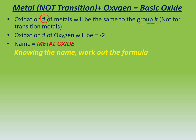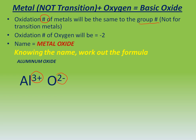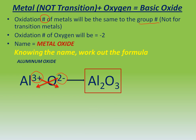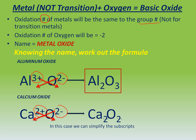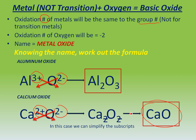Knowing the name, work out the formula. For aluminum oxide, aluminum belongs to group 3, so the oxidation number is going to be positive 3. Oxygen is negative 2. We cross the oxidation numbers and we will have the formula — as simple as that. The same with calcium oxide: calcium is positive 2 because it is in the second group, and oxygen is negative 2. We cross those numbers, and since they are divisible, we simplify them to obtain the formula CaO.